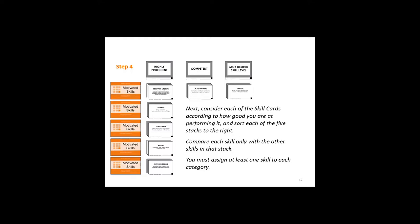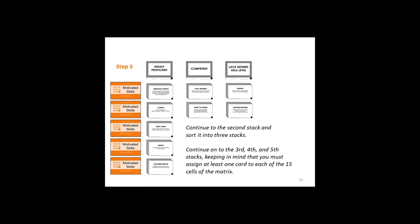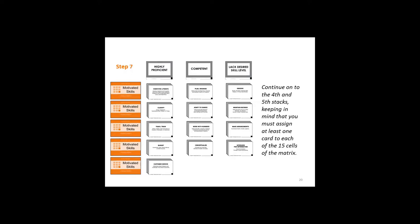I want them to sort each stack into those three stacks according to competency. I make sure they've done that before moving to the next stack. They must leave cards on the same level where they started — sort that stack, then go to the third stack, sort that to the right according to how good they are at it, then go to the fourth and fifth stacks. And finally, when you have those 15 stacks, you then can turn over the cards with the black background.